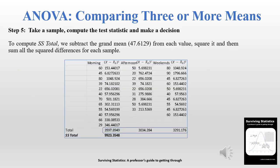To compute the SS total, we subtract the grand mean from each value and square it. We have columns for morning, afternoon, and weekend. We take each value — for example, the first morning value of 60 — subtract the grand mean of 47.613, square it, do that for every value, sum the squared differences, and add all three columns together. We end up with an SS total of 9923.3548, the first value we can place on the ANOVA table.